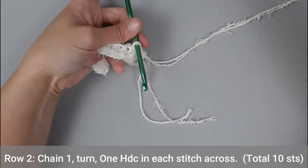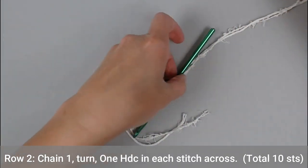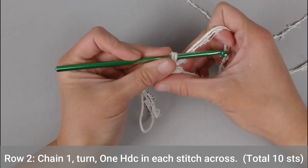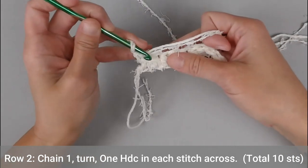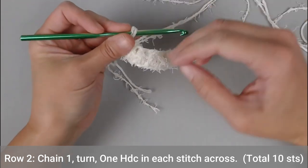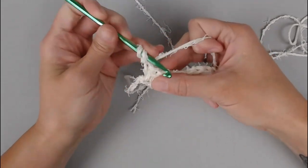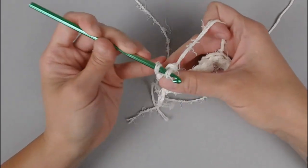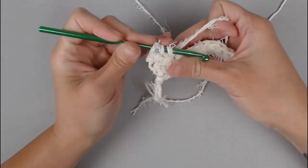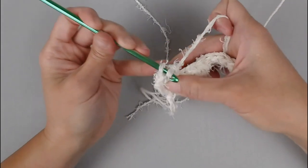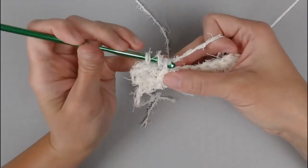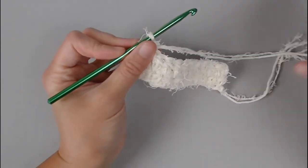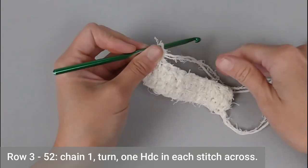For row 2, we will chain 1, turn our work, and we will make one half double crochet in each stitch all the way across. You will end row 2 with a total of 10 half double crochets. Chain 1, turn our work.